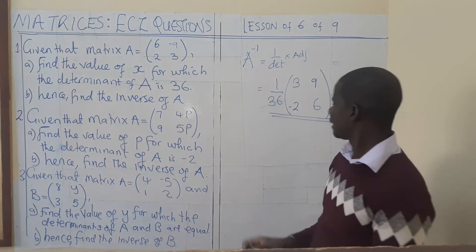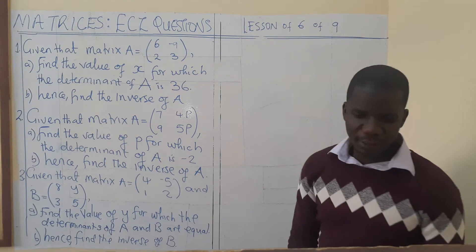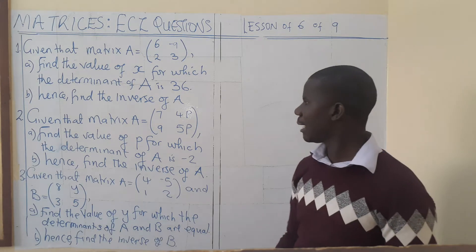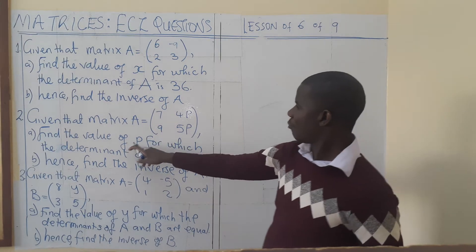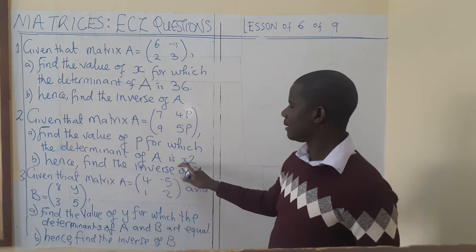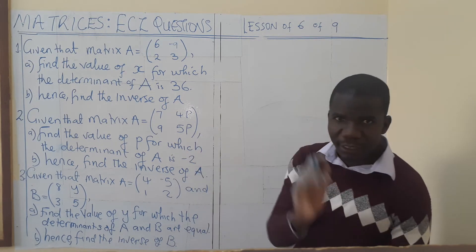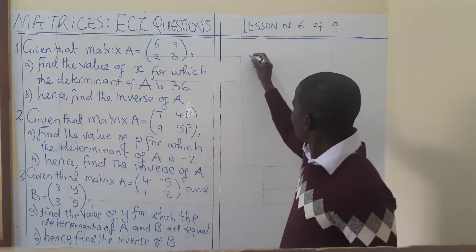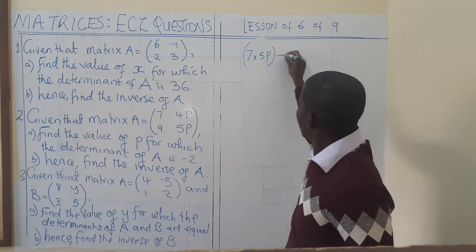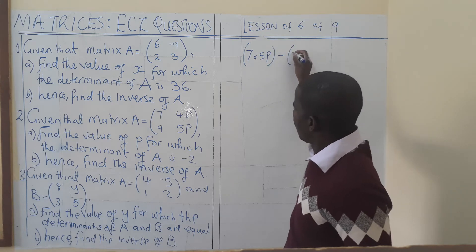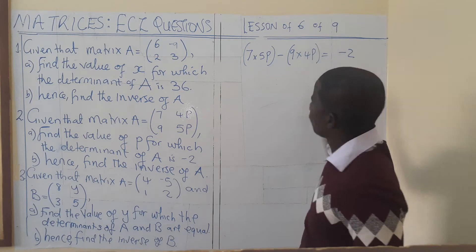Having done this, we proceed to the second question. Find the value of P if the determinant is negative 2. We follow the same process: 7 multiplied by 5P minus 9 multiplied by 4P must give us negative 2.